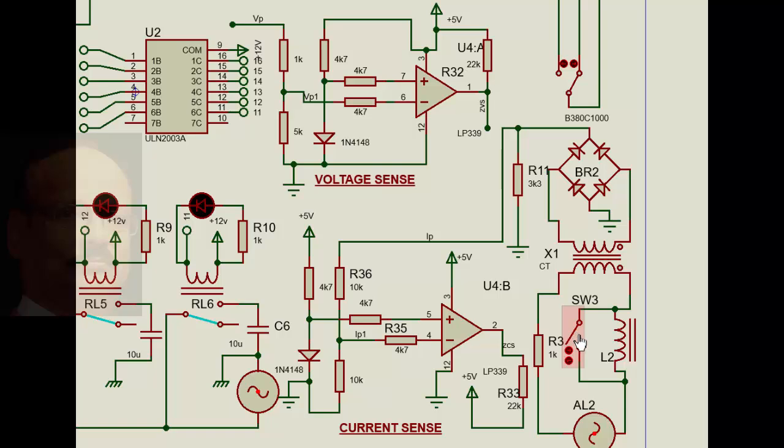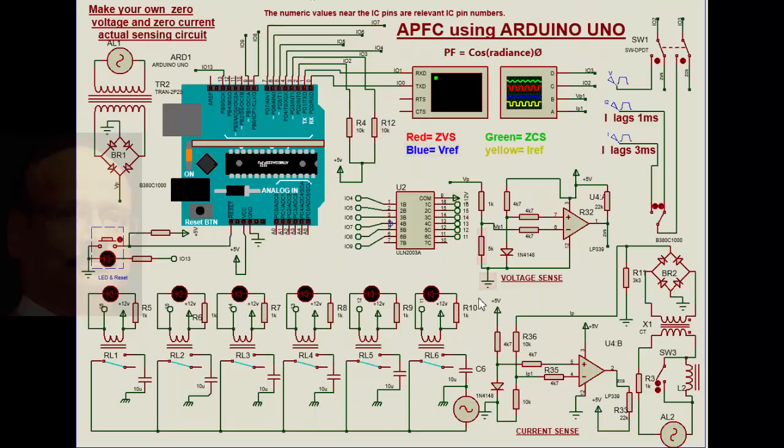When we switch on this, it obviously goes to linear mode — the linear arrangement. This is the arrangement as far as the actual circuit is concerned. Power factor — I am not going to explain much, because everybody knows that when the current lags behind the voltage, the cosine of that angle is called power factor. There are many videos and classifications available, so let me not go into details of that — I just want to deal with the practical aspect.